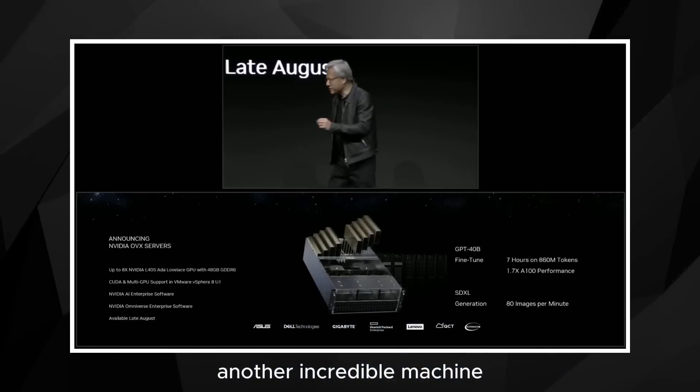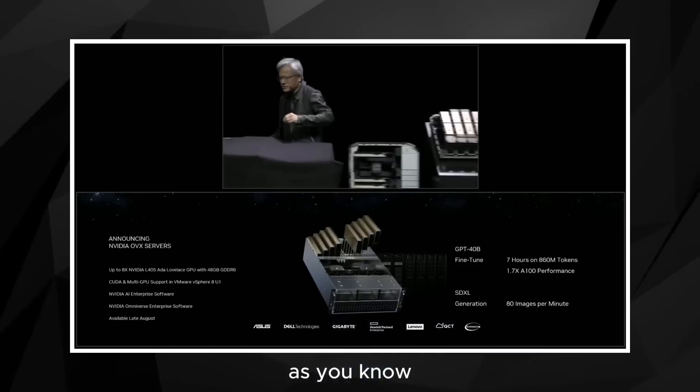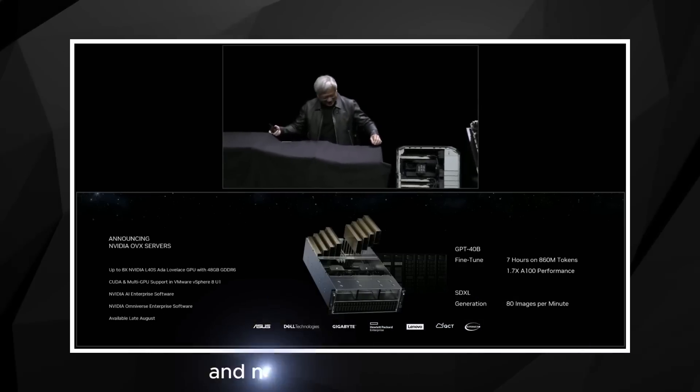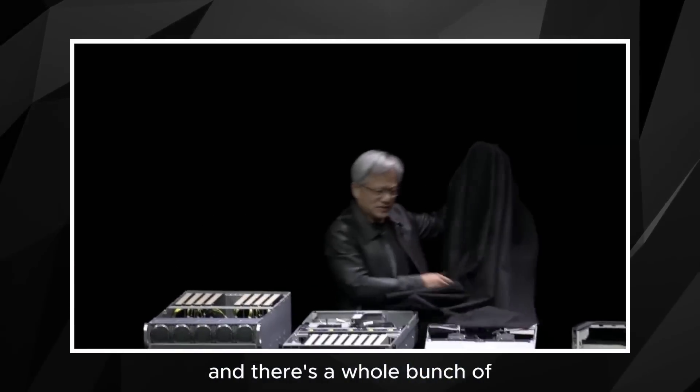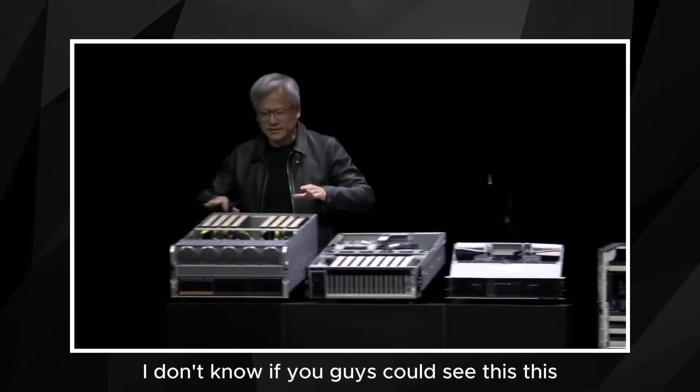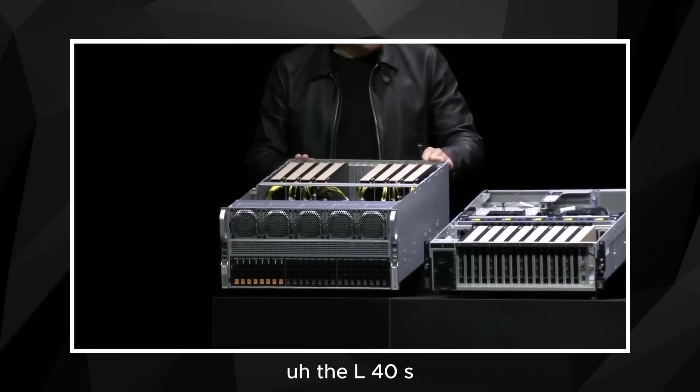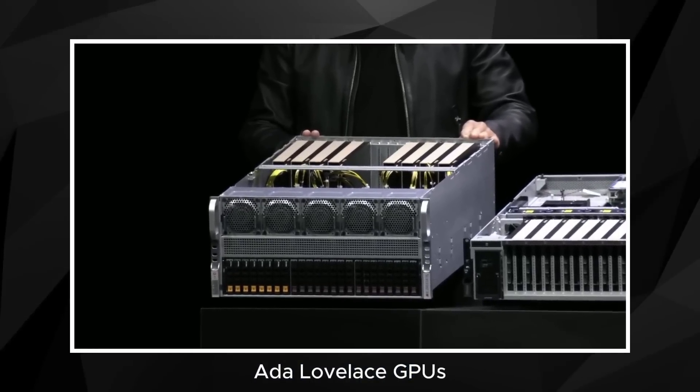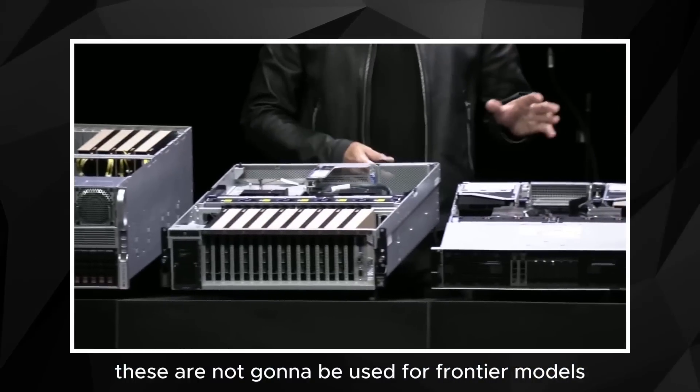And so another incredible machine are the servers. And these servers, as you know, getting GPUs in the cloud these days is no easy feat. And now you can buy it. You could have your company buy it for you and put it in the data center. And there's a whole bunch of these servers, a whole bunch of different configurations. This is a server that has up to eight of the L40s Ada Lovelace GPUs. And, of course, these are not going to be used for frontier models.